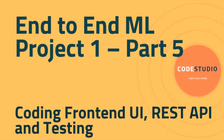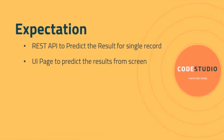Hello guys, welcome to Code Studio. This is our fifth session in the end-to-end machine learning project playlist, where we will write code to build a UI page using basic HTML and also build a REST API for single record prediction, so that the REST API can return the response to the UI page. In the previous session we discussed how to build a Flask project and write Python code to train models and predict results from multiple batch sets. The additional client requirements are: first, a REST API to predict results for a single record, and second, a UI page to predict results from a screen.